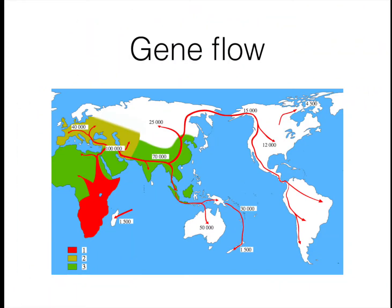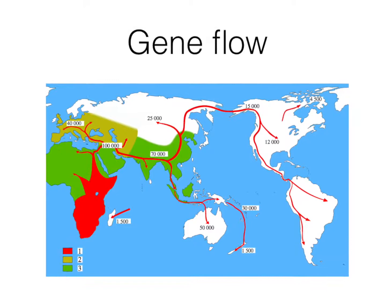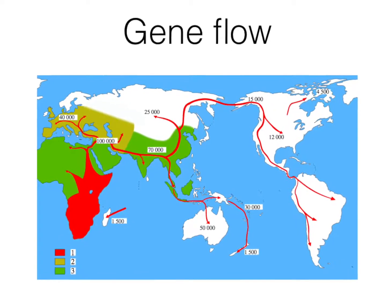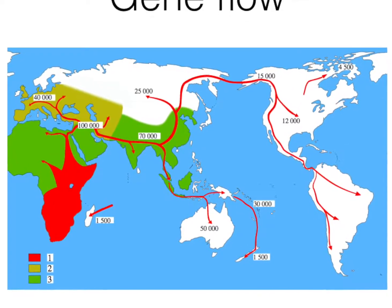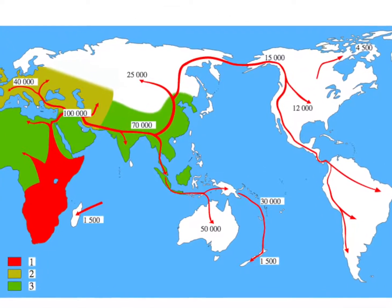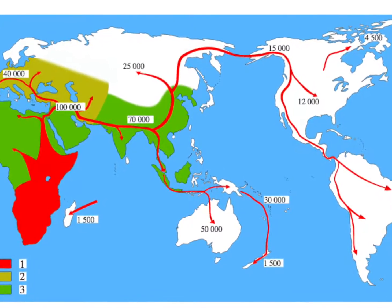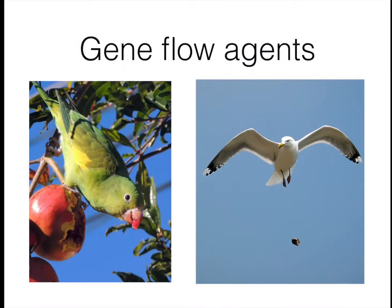Gene flow is the distribution of genetic material within the same species, which is kept by the ability to reproduce with one another. It keeps different populations that might be isolated as the same species, and allows the continued exchange of genes. As a side note, gene flow agents such as birds that help drop the seeds of plants allow for greater diversity and adaptability, since the birds fly to new locations in environments that foster different traits for the plants.